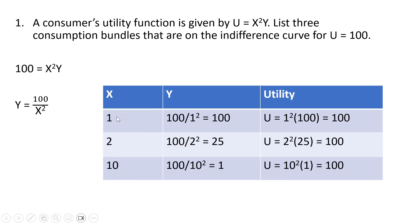Notice that if we plug x equals 1 and y equals 100 into this utility function, utility would equal 100. Let's get another consumption bundle — plug in 2 for x. So 100 divided by 2 squared is 100 divided by 4, which is 25. So x equals 2 and y equals 25 is another consumption bundle that gives a consumer exactly 100 units of satisfaction. For our third consumption bundle, we'll plug 10 in for x. So 100 divided by 10 squared is just 1. The utility is 100 at x equals 10 and y equals 1.